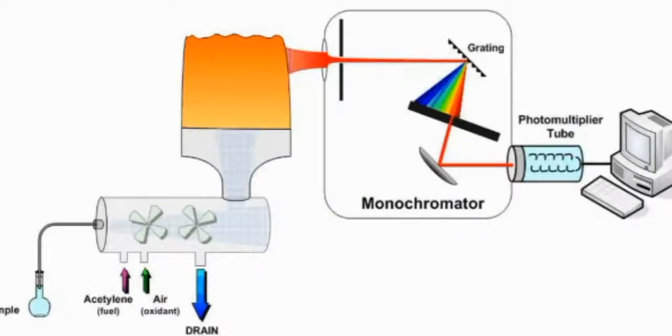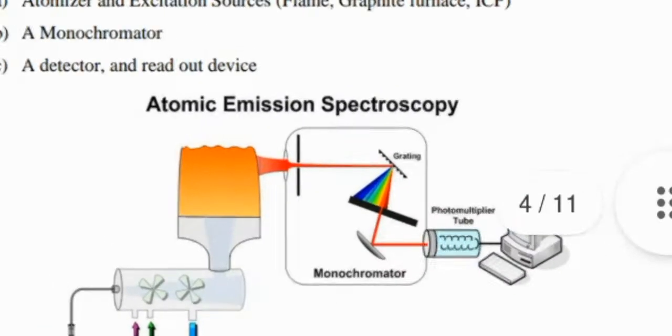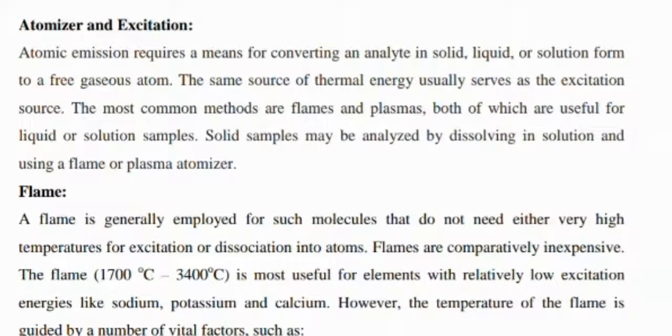monochromator, then further you can see grating in the photomultiplier tube and the detectors. What are the atomizers? Atomic emission requires a means of converting an analyte—solid, liquid, or solution—into free gaseous atoms, and flame is generally employed for molecules that do not need very high temperature for excitation or dissociation